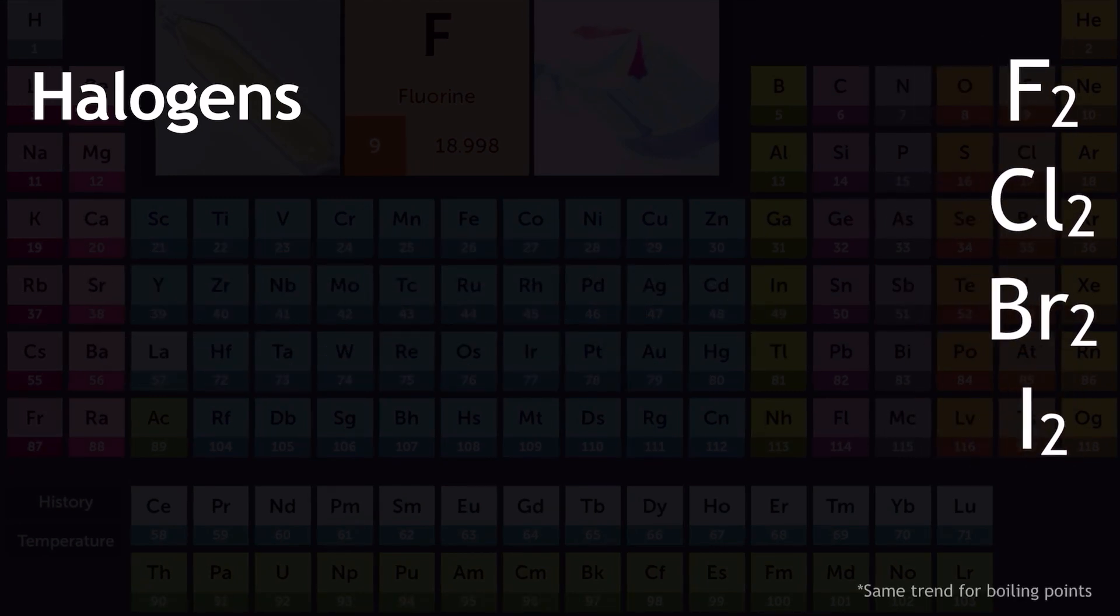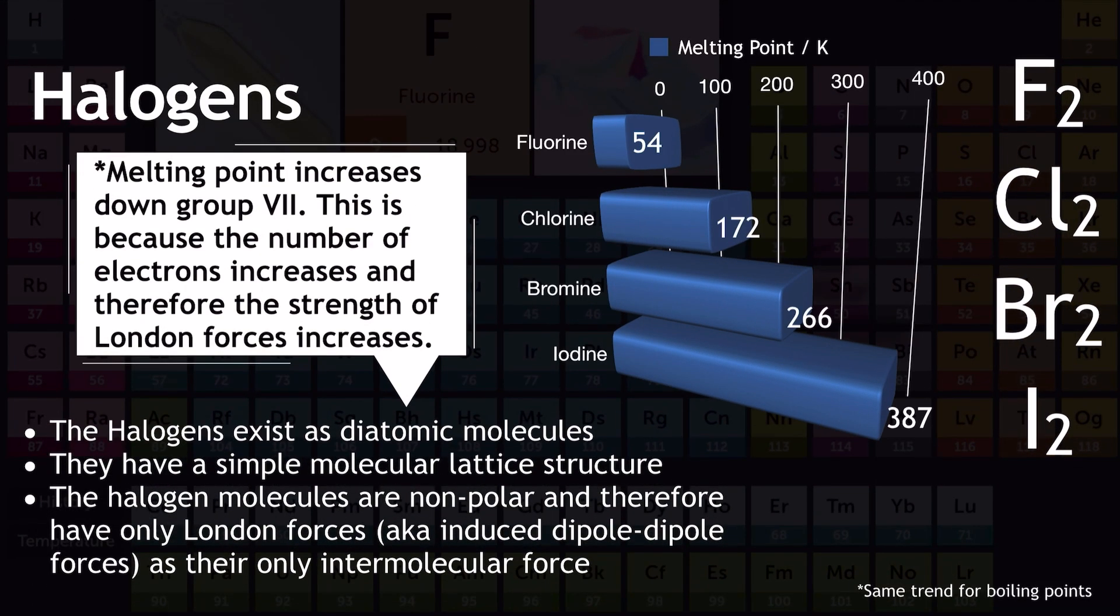That leads us on to the trend in the melting and boiling points. As you can see here with the chart on screen, there's an increase in the melting points and boiling points as you go down group 7 on the periodic table. This is because the number of electrons increases as you go down the group, and therefore the strength of these London forces increases. So iodine has got the highest melting point out of the four you can see here, because it's got the most electrons and the strongest London forces.